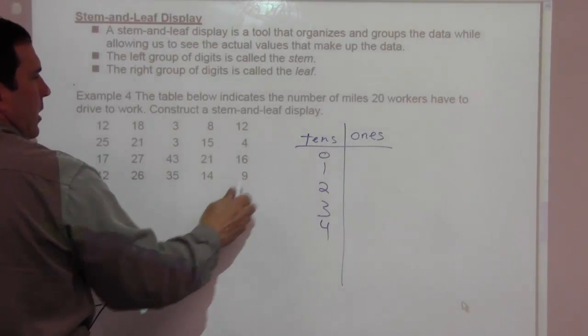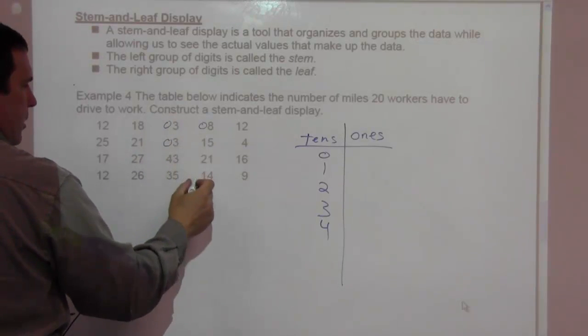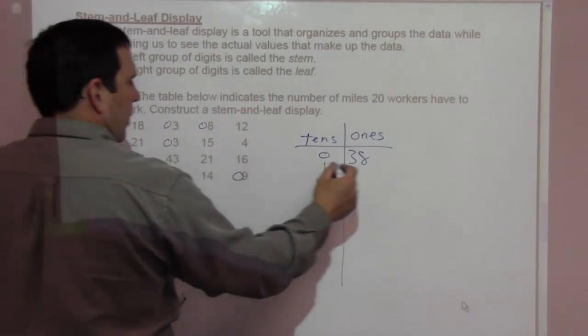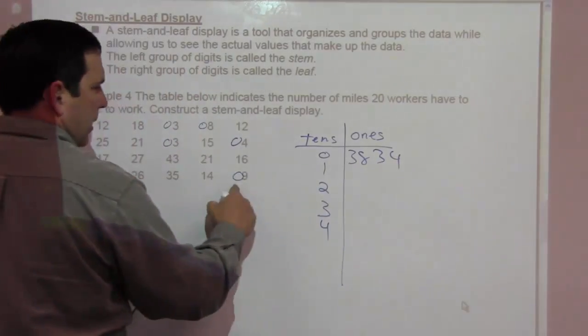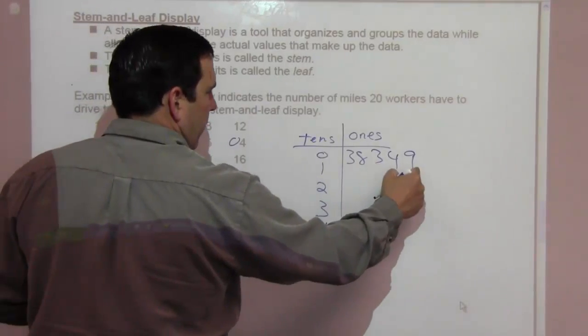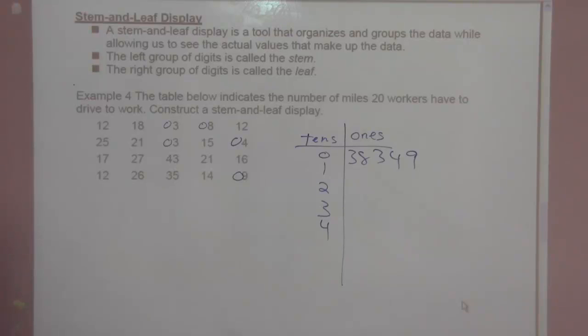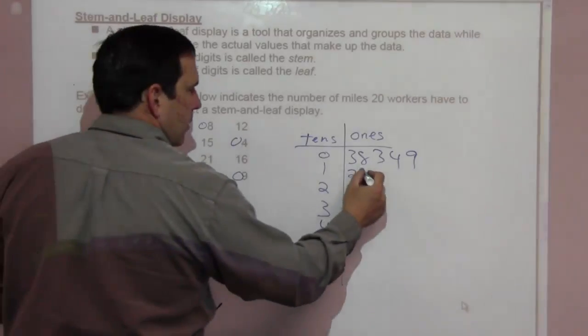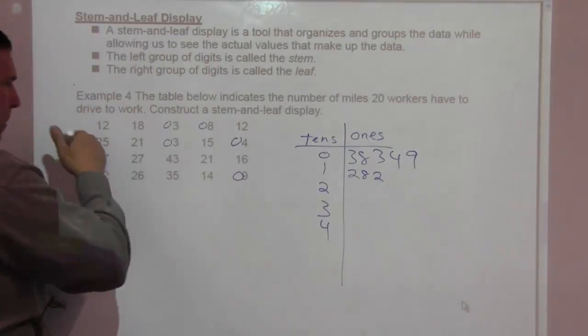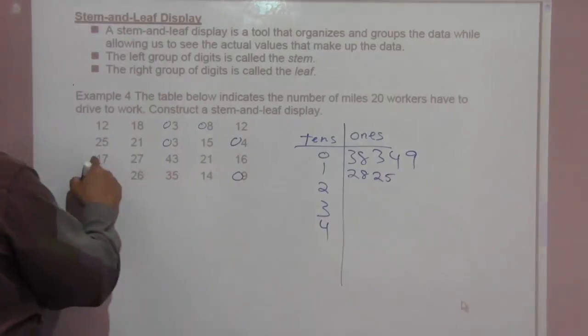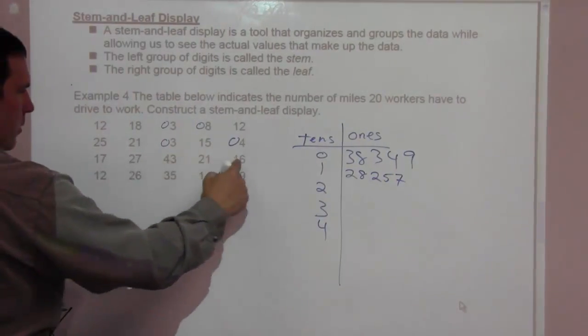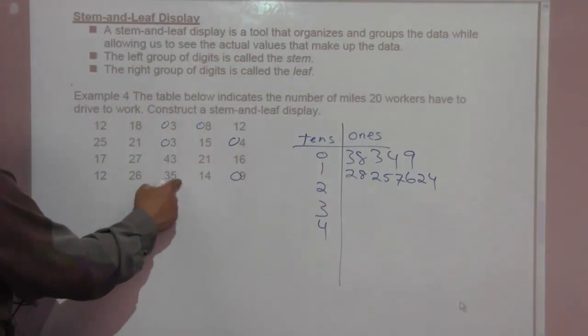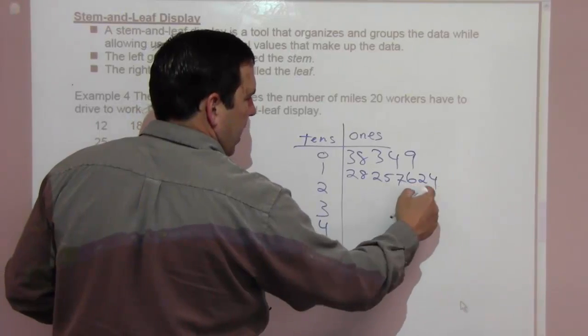Now, let's put zeros in front of these and make them all two digits. So we have zero three, zero eight, zero three, zero four, and zero nine. So we have one, two, three, four, five data points. It means there are five people in that column or row. For the next one, we have one two, one eight, one two again, one five, one seven, one six, one two, and then one four. That's one, two, three, four, five, six, seven, eight people there.